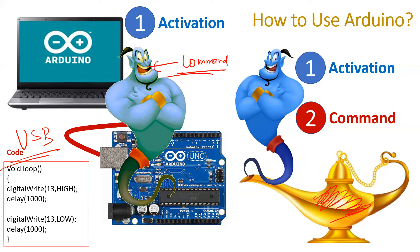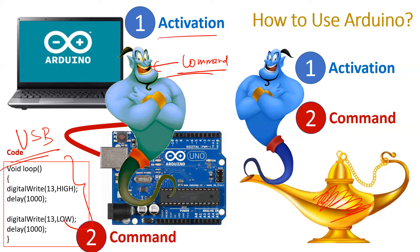The commanding of the genie in Arduino is done by writing a piece of source code, by virtue of which we can take control over the genie of our Arduino. So these are the two steps: first, we need to activate it by powering the board; second, we need to write a piece of source code to command the genie to do something useful.